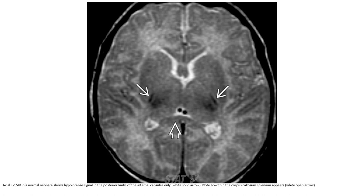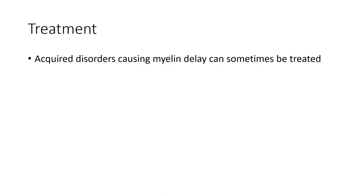T2 in the normal neonate shows hypointense signal in the posterior limb of the internal capsule only. Note how thin the corpus callosum splenium appears. Disorders causing delayed myelination can sometimes be treated.